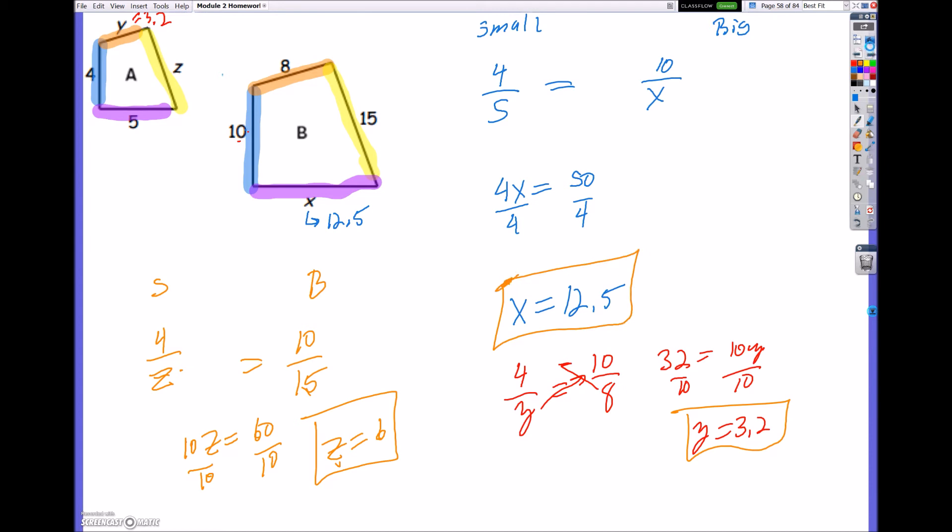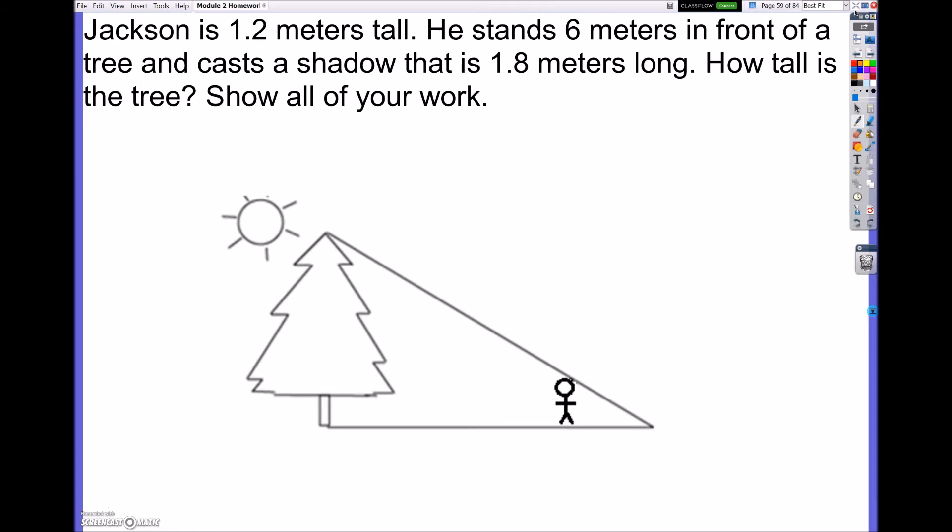Awesome. So let's go ahead now and look at this next one. This last one is pretty tricky, because it's a word problem. It says Jackson is 1.2 meters tall. So right here, here's Jackson. He's 1.2 meters tall. He stands 6 meters in front of the tree. So here's Jackson. Here is how far he is away from the tree. And his shadow, so his shadow is going this way. His shadow is 1.8 meters.